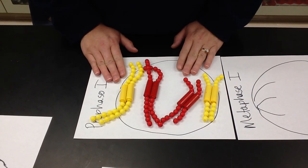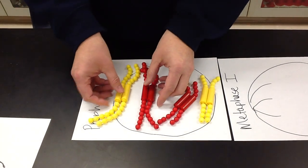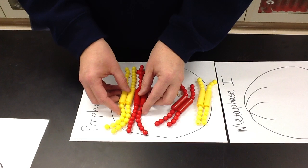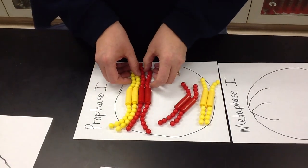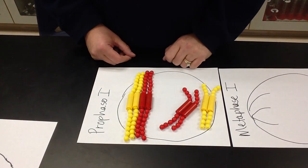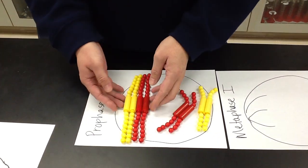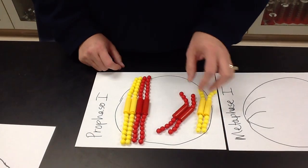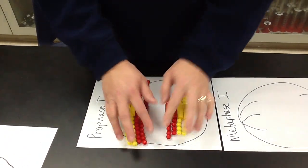I'm going to show you the homologous pairing that's going to take place between tetrads. Remember, a homologous pair is a chromosome pair that has the same size, shape, centromere position, genetic information, and that's what I have here is a tetrad or a homologous pair. I'm going to form another one here.